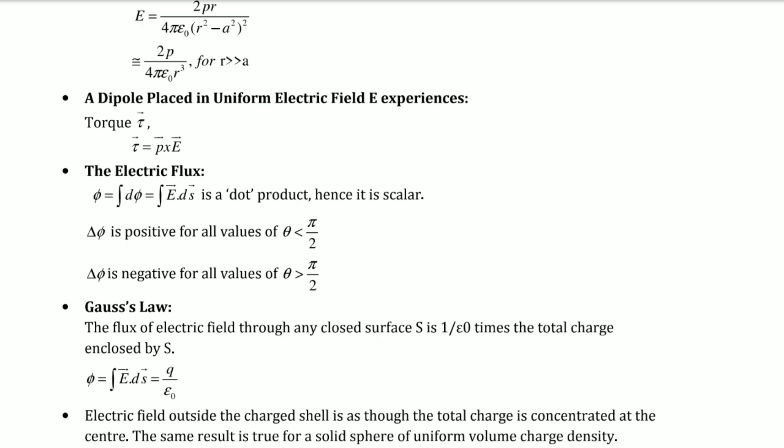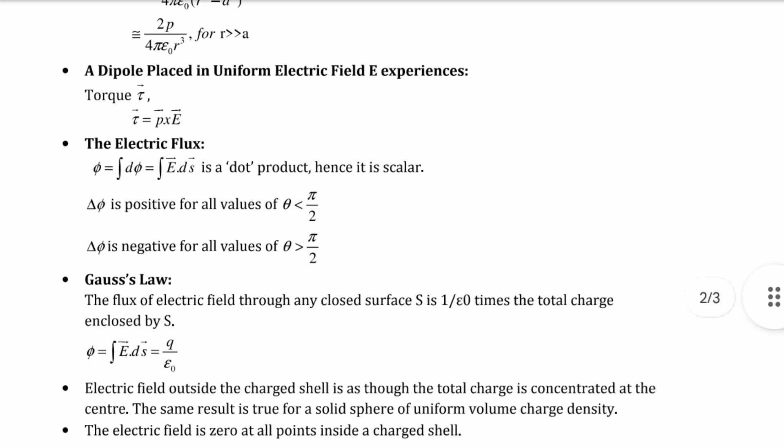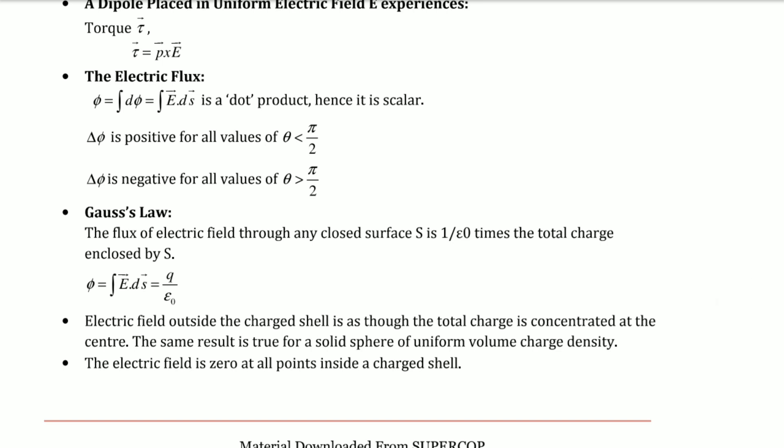A dipole placed in uniform electric field experiences torque τ = p × E. Electric flux: φ = ∮E·dS (closed integral). It's a dot product, hence scalar. Flux is positive for all values of θ < π/2 and negative for θ > π/2.